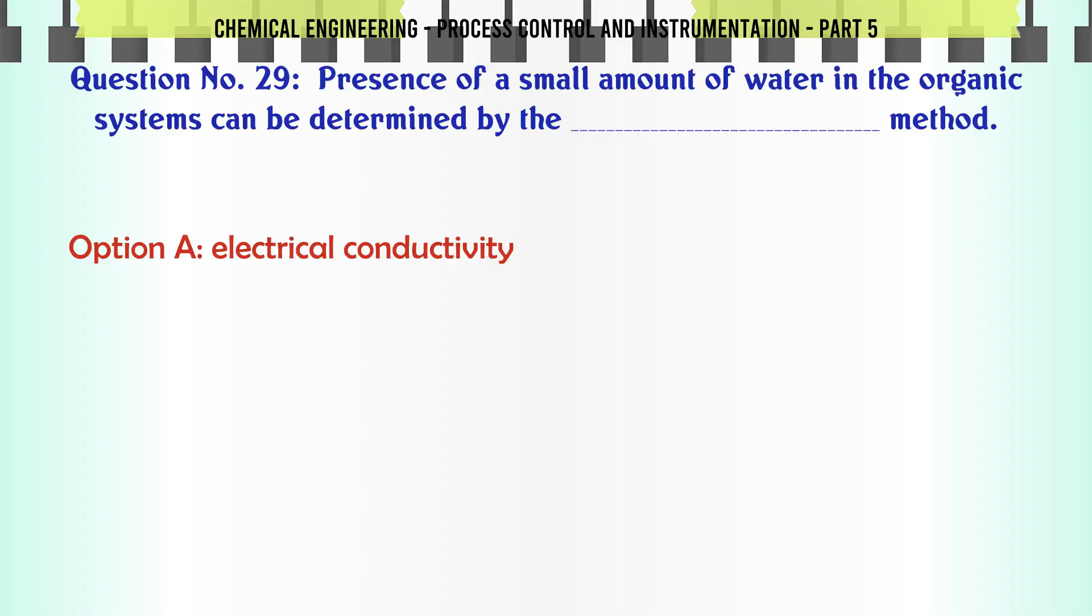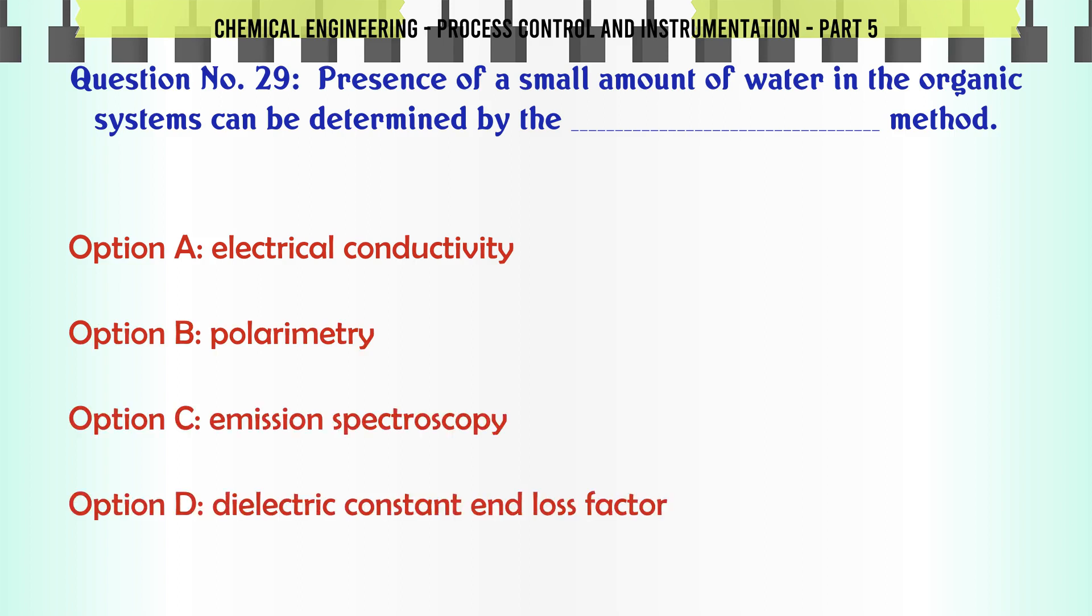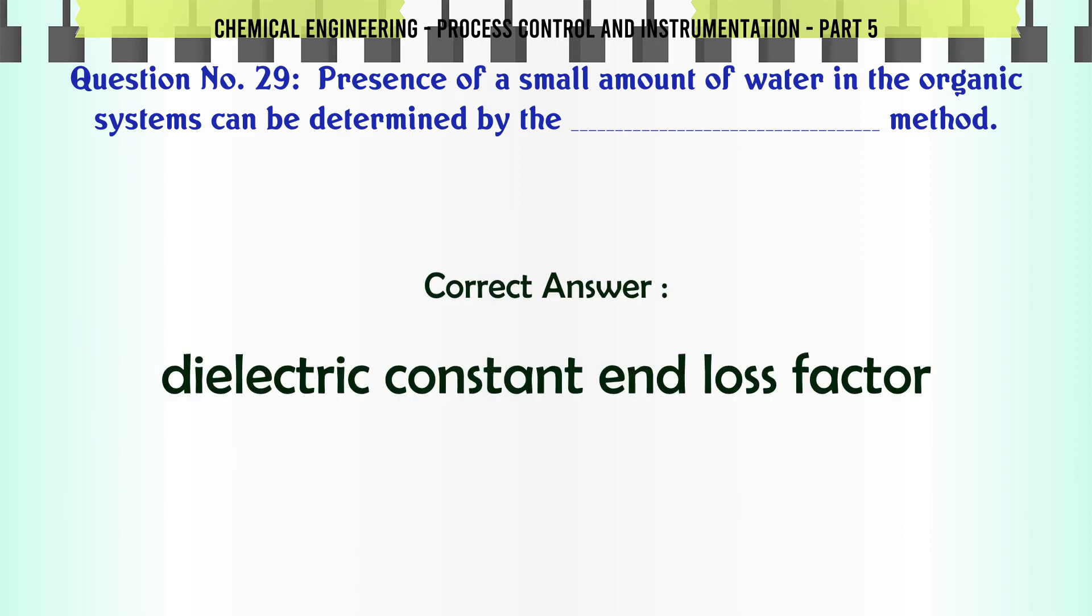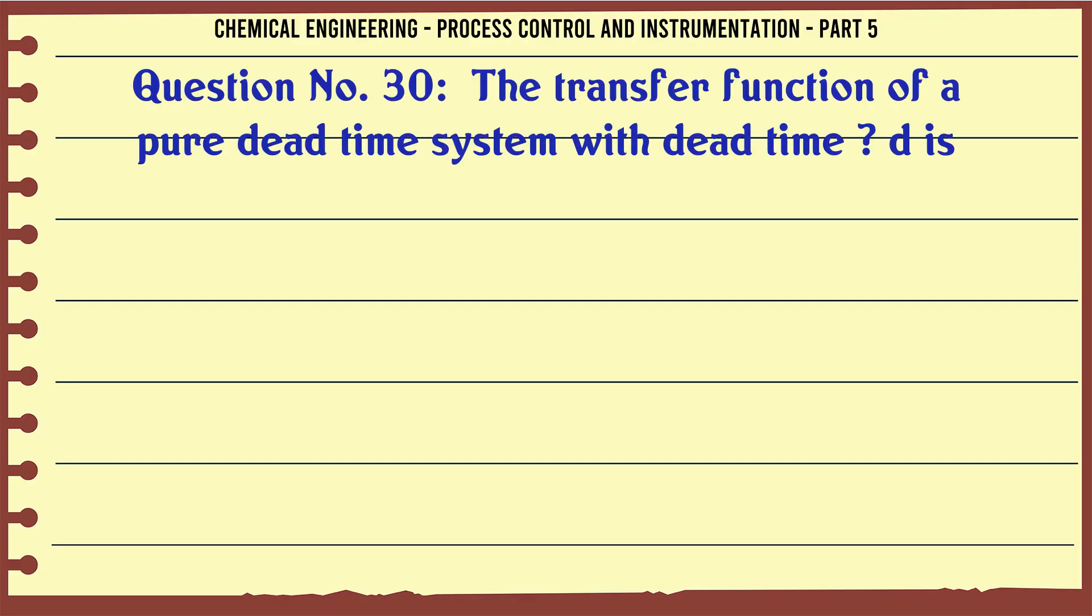Presence of a small amount of water in the organic systems can be determined by the method: A. Electrical conductivity. B. Polarimetry. C. Emission spectroscopy. D. Dielectric constant and loss factor. The correct answer is Dielectric constant and loss factor.